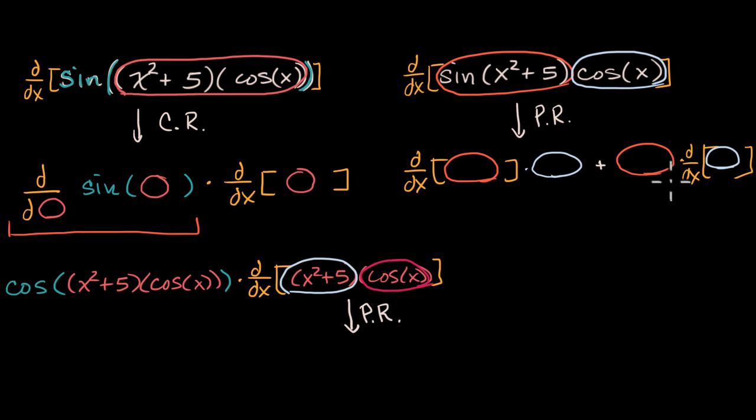Once again here, this is just the product rule. You can substitute sine of x squared plus five where you see this orange circle and you can substitute cosine of x where you see this blue circle. But the whole point here isn't to actually solve this or compute this, but really to just show how you identify the structures in these expressions. To think about, do I use the chain rule first and then use the product rule here? Or in this case, do I use the product rule first? And even once you do this, you're not going to be done. Then to compute this derivative, you're going to have to use the chain rule. And you'll keep going until you don't have any more derivatives to take.